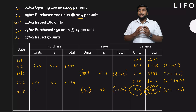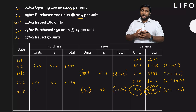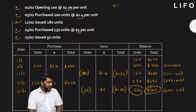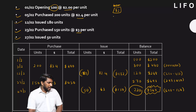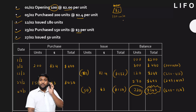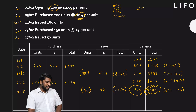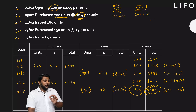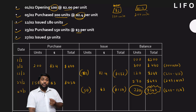This is how you do the calculation using the store ledger. Now let me show you a shortcut method — but you have to be a little focused. The materials received first are the $2 worth materials — 100 units in that basket. Then you purchased $2.40 worth materials — a new basket with 200 units. You then made an issuance of 180 units. You issue from the $2.40 basket because that's the material received last. After issuing 180 units, only 20 units remain in that $2.40 basket.